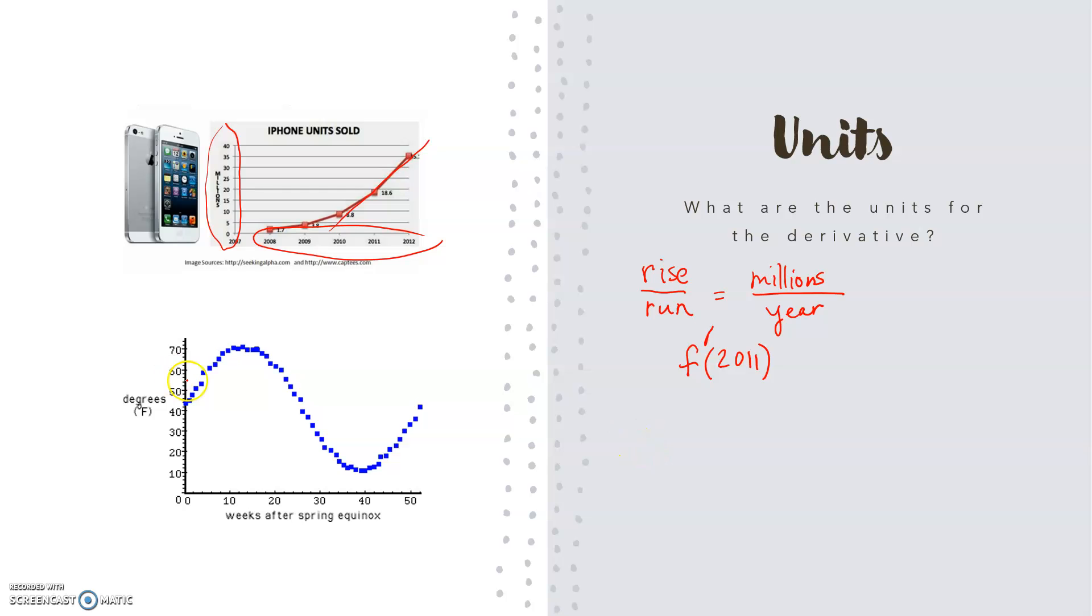If I were looking at the second graph, the rise over run units would be degrees Fahrenheit per week. So if I looked at t equals 20, I would look at the slope here at 20, and I would say something like the rate of change 20 weeks after the spring equinox in degrees Fahrenheit per week is, and then I would figure out what that slope is. Units are really going to help you think about what this derivative really means.